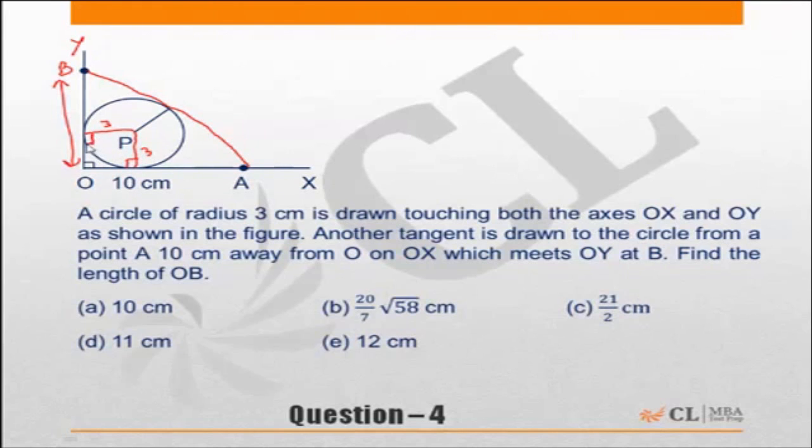This will be a right angle, so this will be a square of side 3. Hence, this portion up to this point, let's say this point is P, this point is Q, then this is 3. The remaining will be 7.